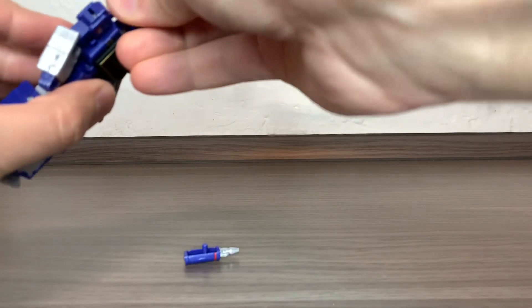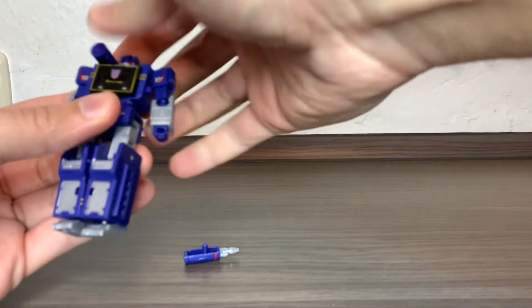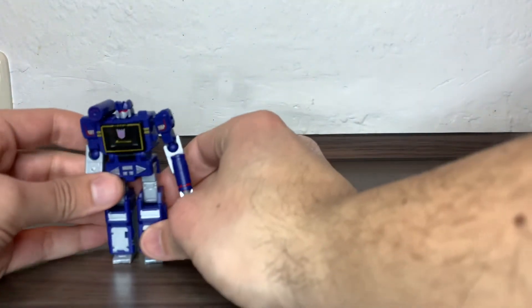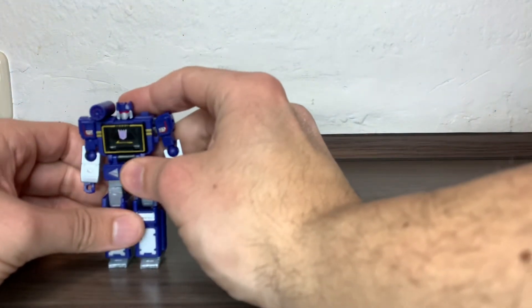You bring the head out, turn it around, bring the fists out. You peg the shoulder cannon here on the shoulder, of course. Then you give him his weapon in whichever hand you decide. I want to have it there to break the symmetry and have one weapon on each side.